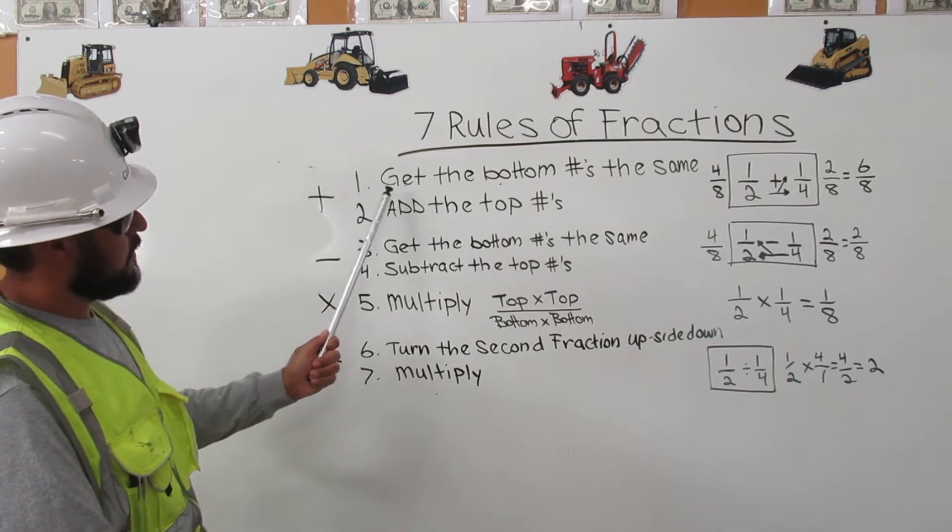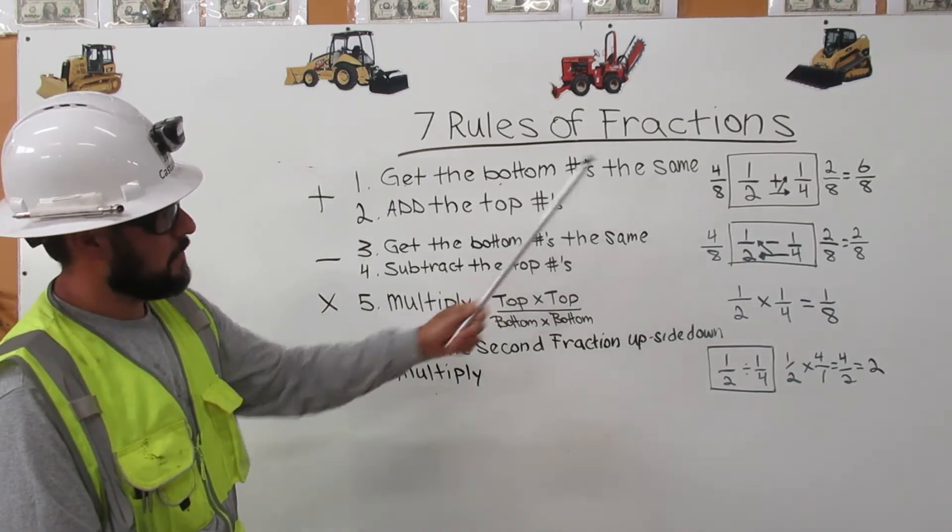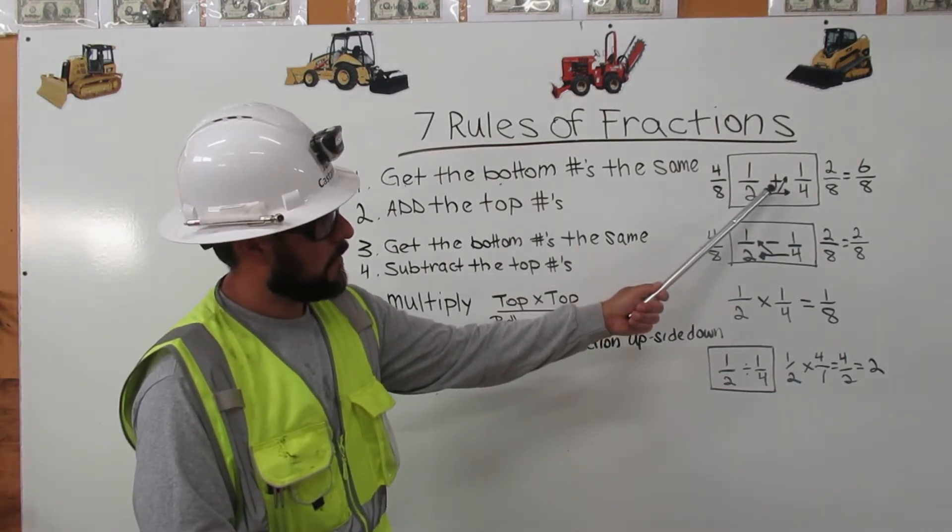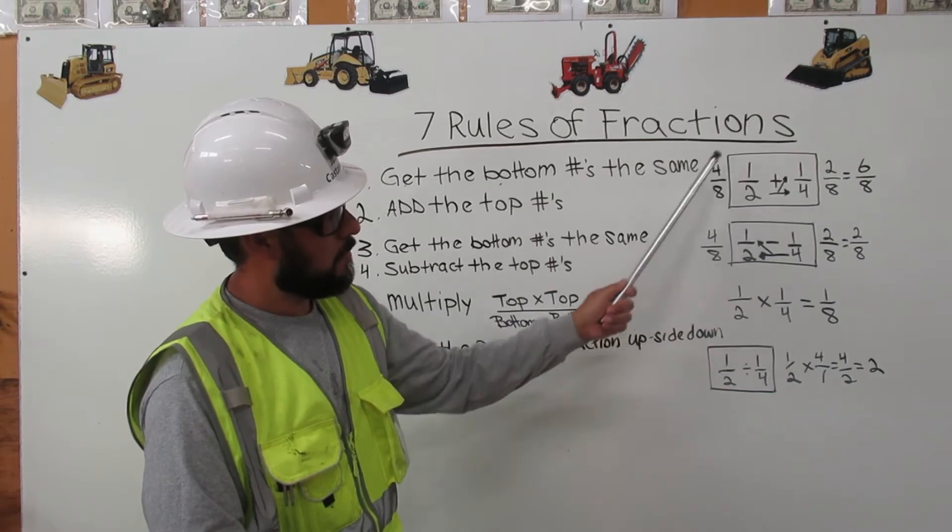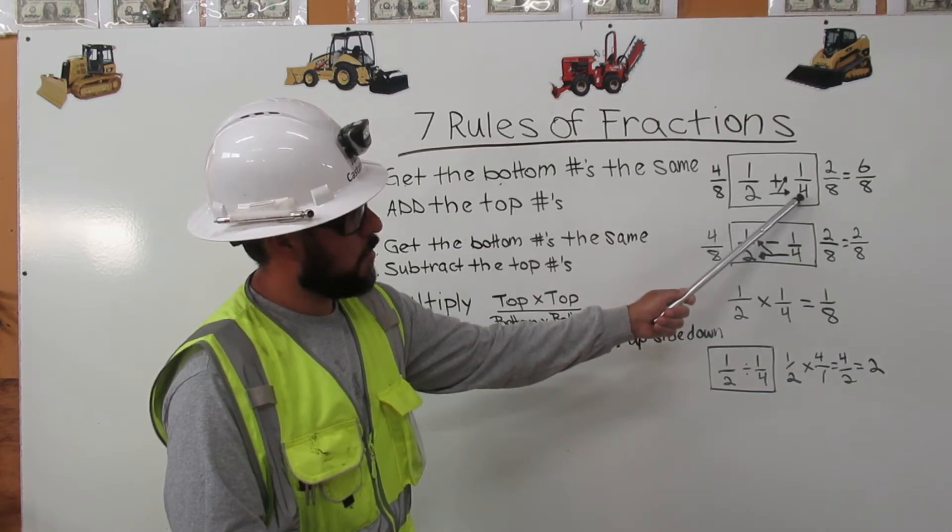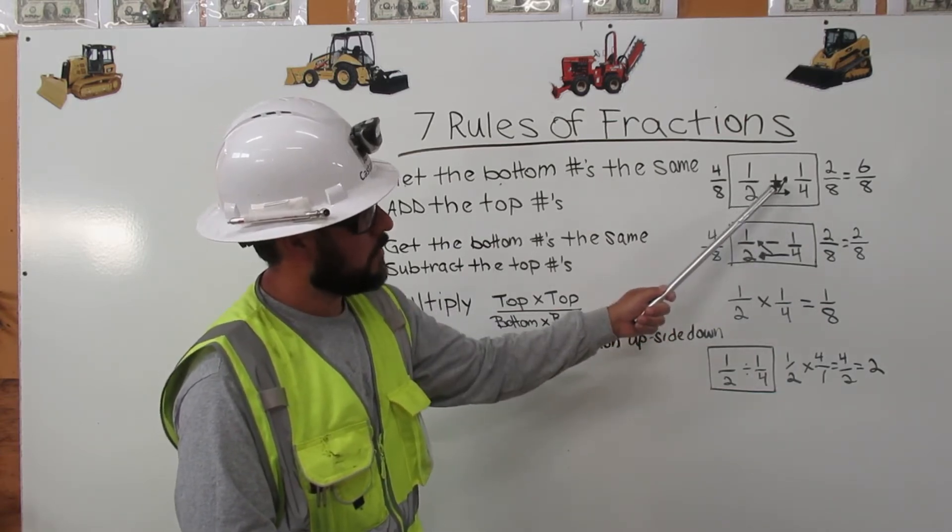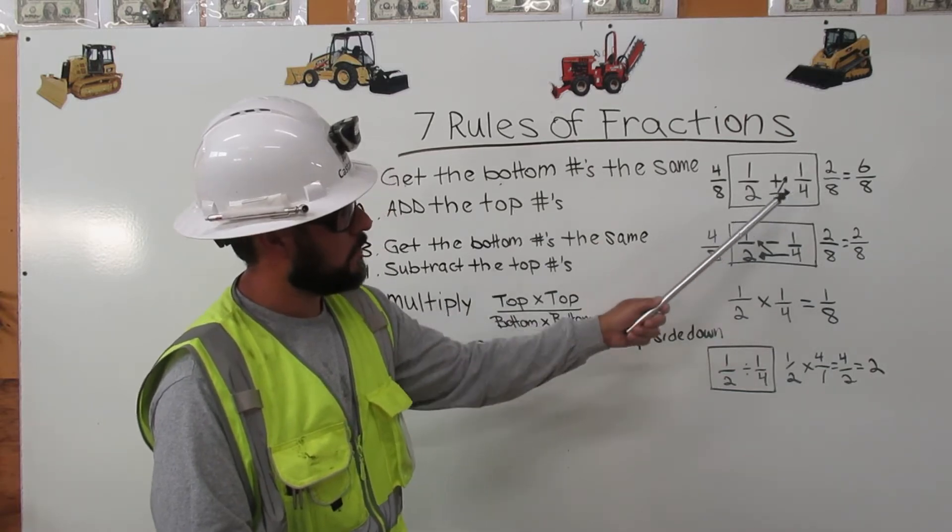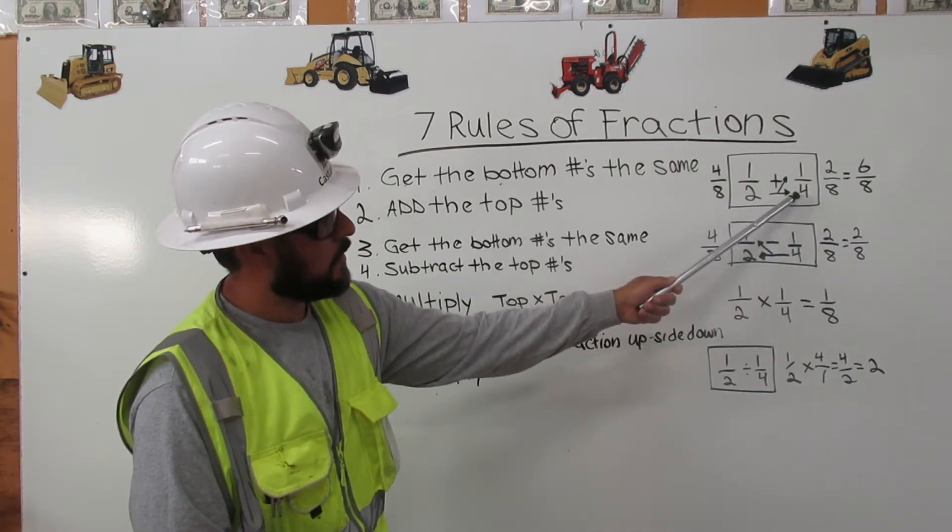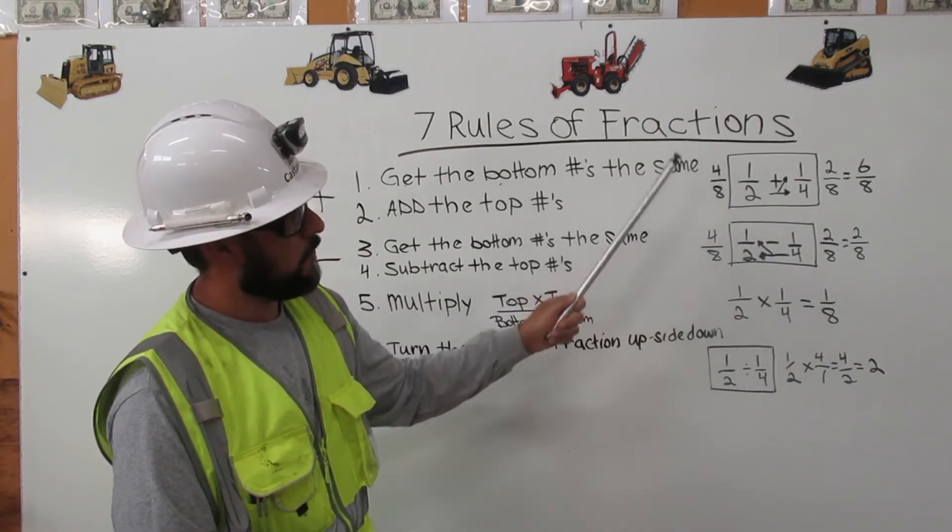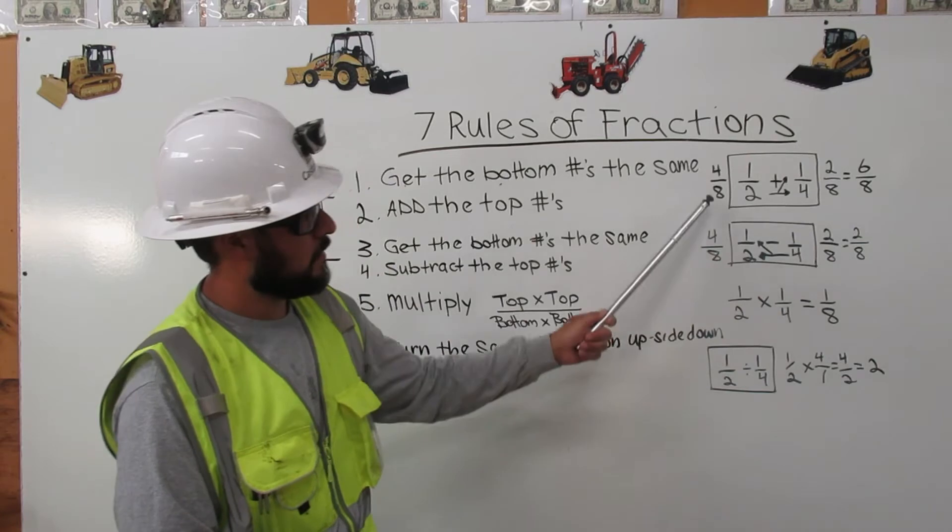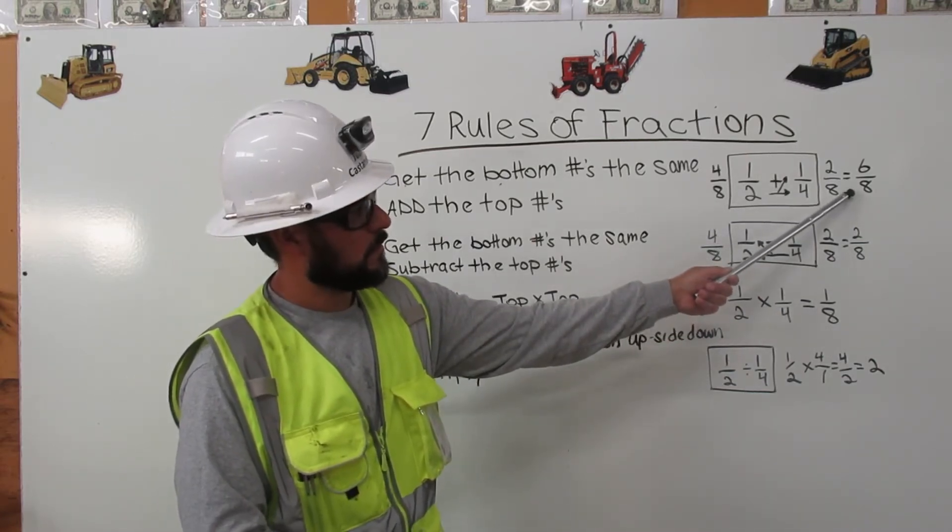For addition, get the bottom numbers the same. Add the top numbers. Half plus one-fourth, box it, cross multiply. Two times four is eight. Two times one is two. Four times two is eight. Four times one is four. Four plus two, six. Carry the eight over. Six-eighths.